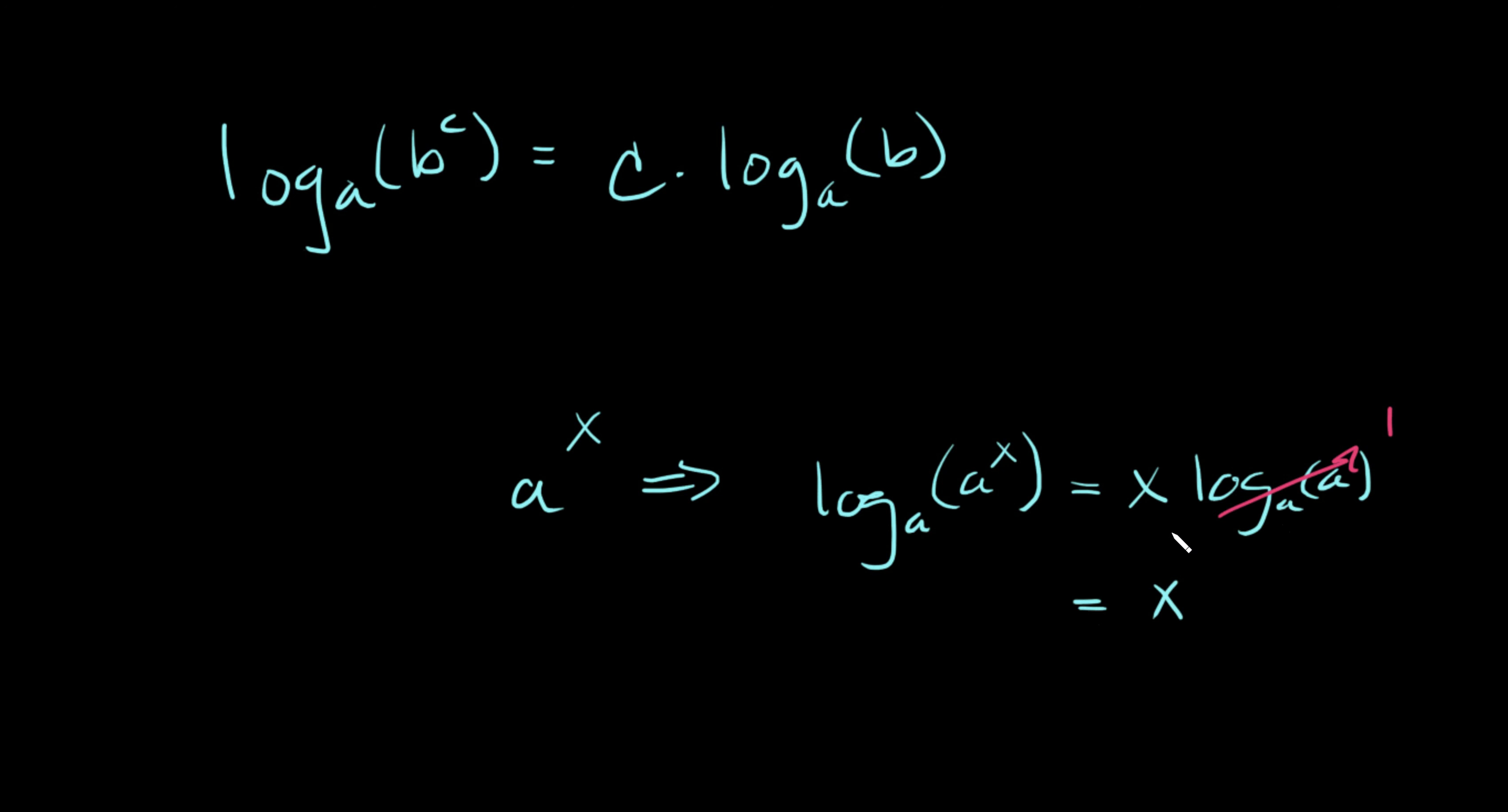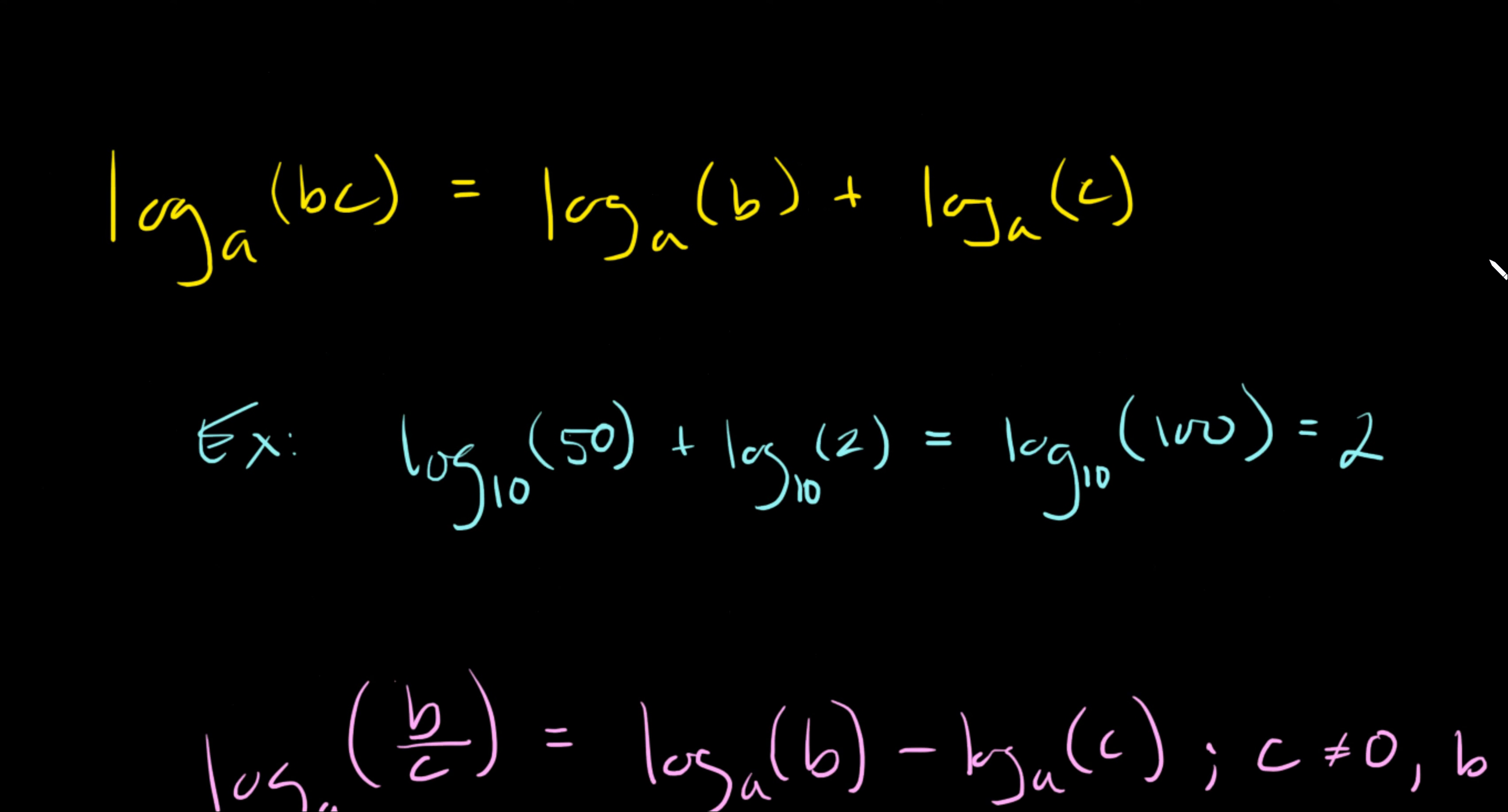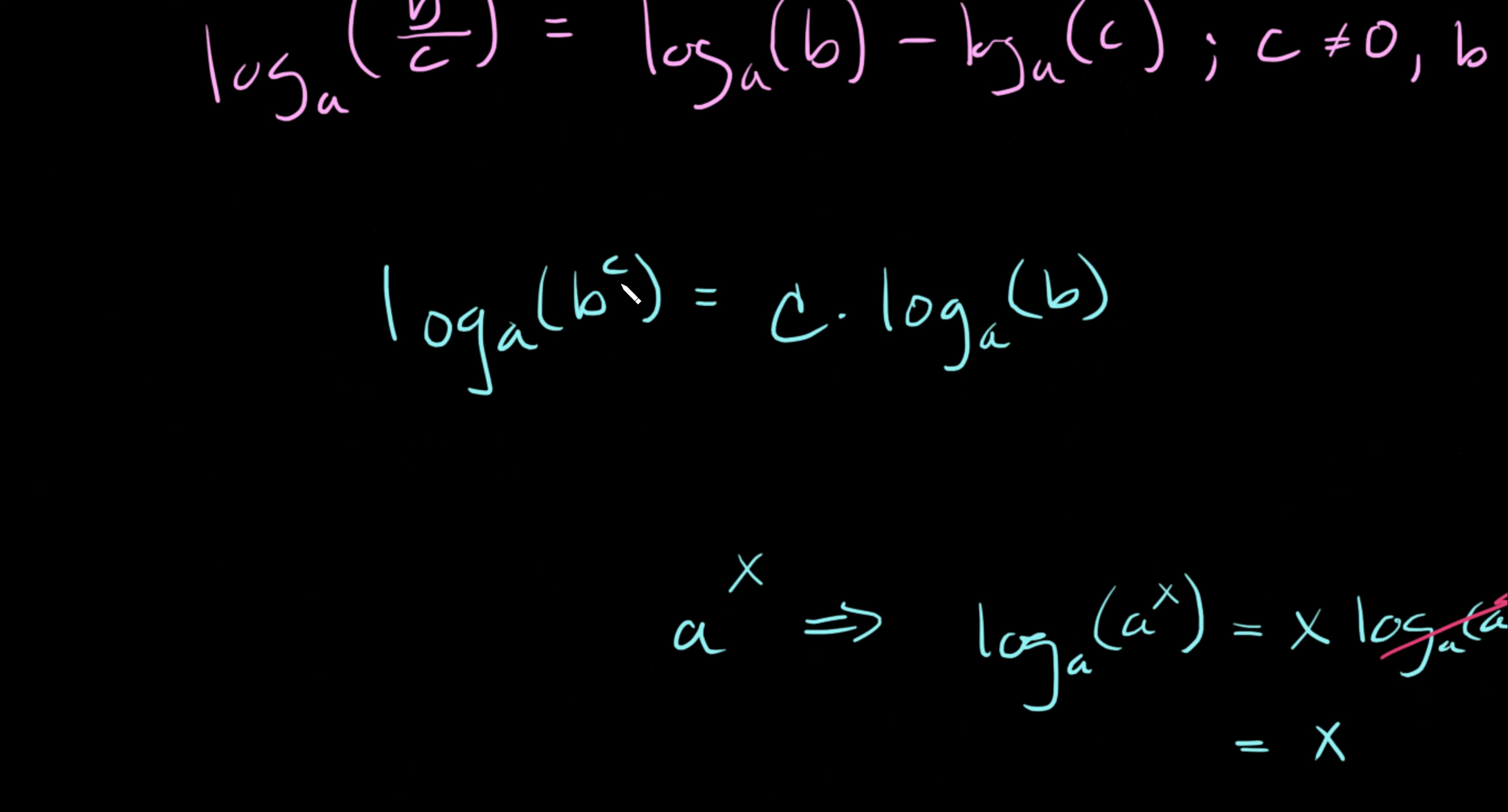And so this is a really handy way to isolate variables that are, in my words, trapped in the exponent positions. Okay. So these are the three log properties here. So you've got like a product or yeah, product property. When you have a product inside your log, you can expand it into a sum. You have a quotient property. So when you have a quotient inside your log, you can expand that into a difference. And then you have an exponent kind of property or power property, where if you have some input inside your log that's being raised to an exponent, you can bring that exponent down out front.